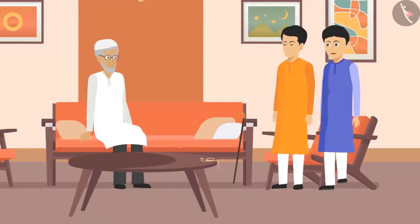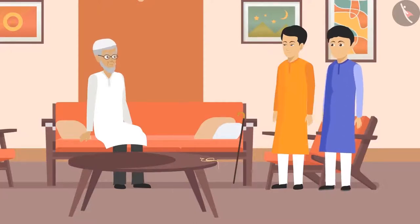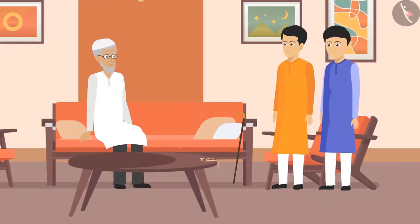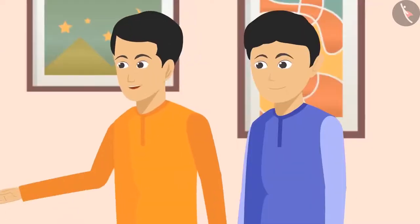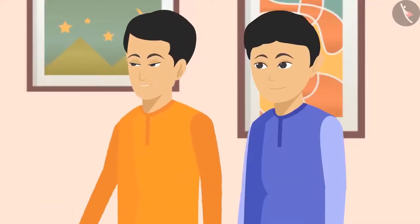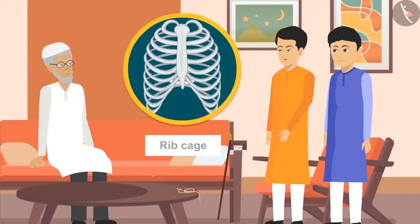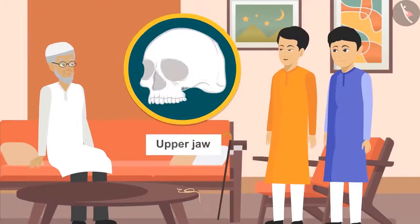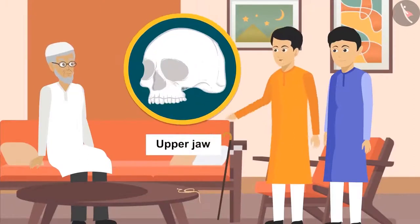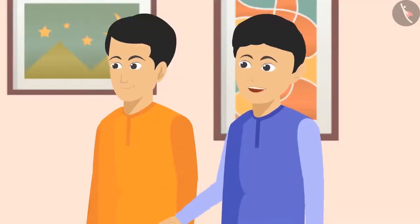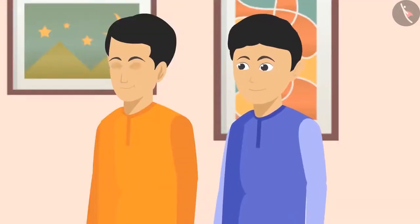'The joint found between our hands and shoulders lets us rotate our hands in all four directions to some extent. We can also move our legs left and right or backward and forward — though they are not as flexible as the shoulder. But Chacha ji, every joint is not for movement. Some joints are there for strength only — our rib cage and our upper jaw are made up of such fixed joints.'